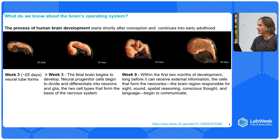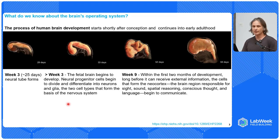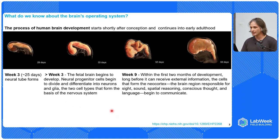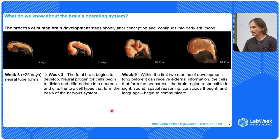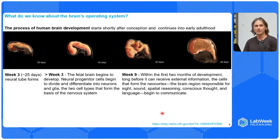The process of human brain development starts shortly after conception and continues into early adulthood. Within a few weeks, the neural tube forms. After week three, the fetal brain begins to develop. Neural progenitor cells begin to divide and differentiate into neurons, as well as glia — the two cell types that form the basis of the central nervous system. At week nine, within the first two months of development, long before it can receive external information, the cells that form the neocortex — responsible for sight, sound, spatial reasoning, conscious thought, and language — begin to communicate.